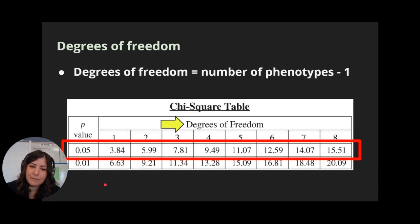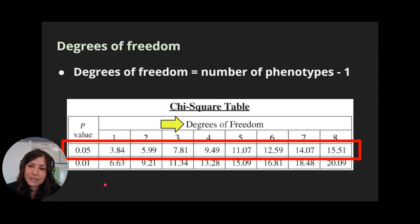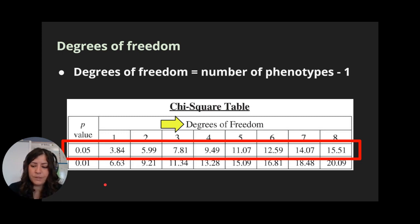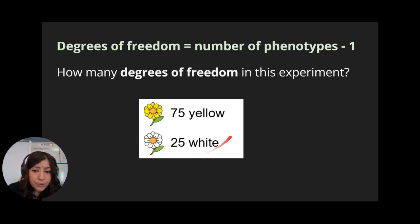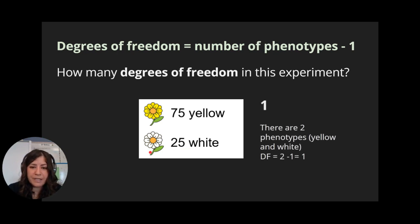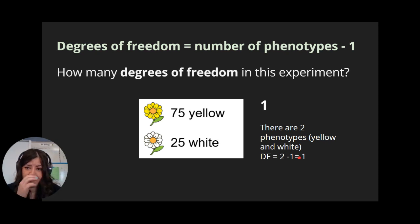Degrees of freedom is a statistics concept — what's most important is how to calculate it. Degrees of freedom is just the number of phenotypes minus one. In this example, we have two phenotypes — yellow or white — so our degrees of freedom would be one, because two phenotypes minus one equals one.